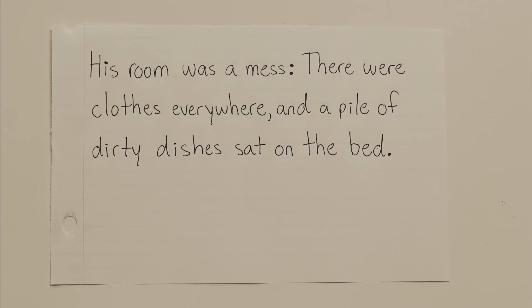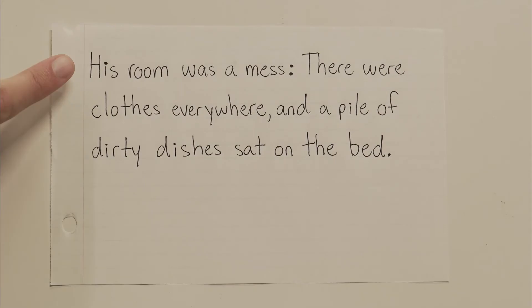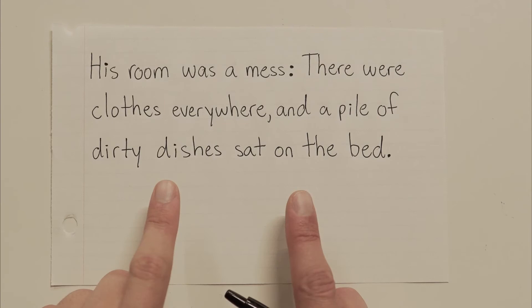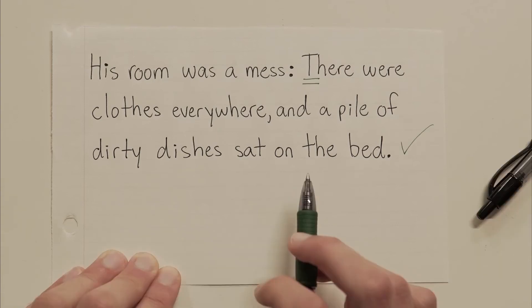His room was a mess: There were clothes everywhere, and a pile of dirty dishes sat on the bed. So, just like the other examples, this is a proper use of a colon. You have a complete sentence before the colon, along with some extra information about that sentence right after the colon. Only in this example, the extra information is actually a full sentence. And if that's the case, we just capitalize it.